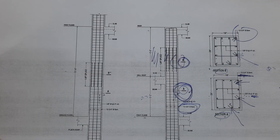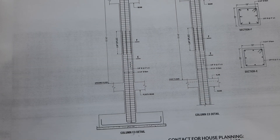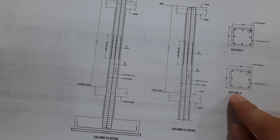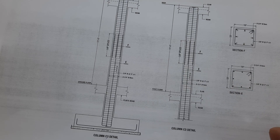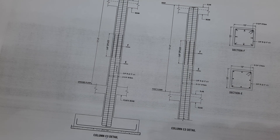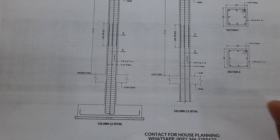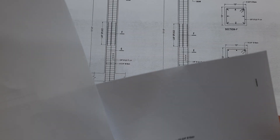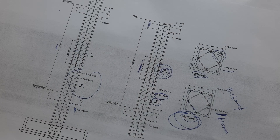For C3 detail, the size is 15 by 15 inches with eight numbers of steel bars — total eight numbers of steel reinforcement. The diameter is 16 millimeters, same as in each column. So the sizes are: C1 is 18 by 24 inches, C2 is 18 by 18 inches, and C3 is 15 by 15 inches. Thanks for watching — see you in the next video, goodbye.